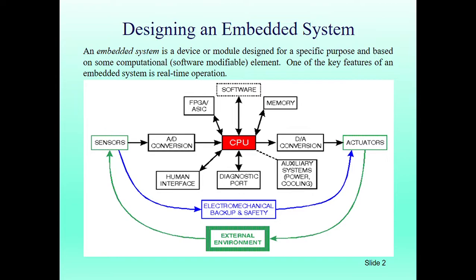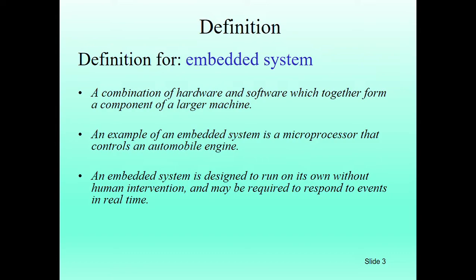This is an example of how the embedded system works and how you can design one. The definition of an embedded system is basically a combination of hardware and software which together form a component of a larger machine — for example, a microprocessor that controls an automobile engine. An embedded system is designed to run on its own without human intervention and may be required to respond to events in real time.